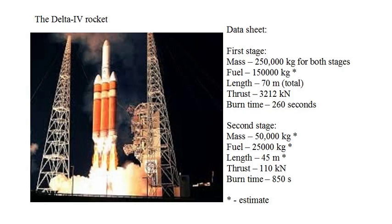Reviewing the data for the simplest configuration for the Delta IV, we have the first stage data — that's for the complete rocket when it lifts off. The mass is 250,000 kilograms. The fuel is 150,000 of those kilograms, expended during the first stage. The total length of the rocket is 70 meters. The thrust of the first stage is 3,212 kilonewtons, and the burn time is 260 seconds.